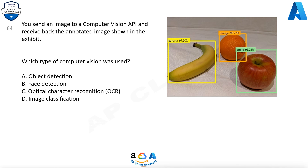Question 84: You send an image to a computer vision API and receive back an annotated image shown in the exhibit. Which type of computer vision was used? A. Object Detection. B. Face Detection. C. Optical Character Recognition (OCR). D. Image Classification.